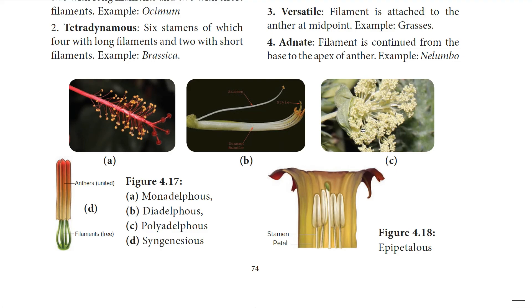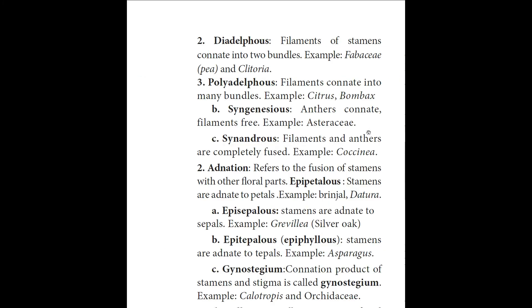In Syngenesious, the anthers connate together but the filaments are free. Example: Asteraceae family. In Synandrous, the filaments and anthers are completely fused — the entire androecium is fused together. Example: Coccinea.